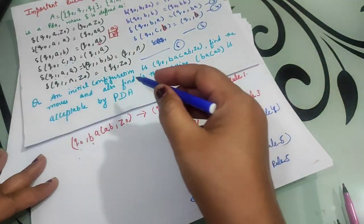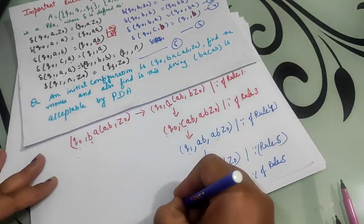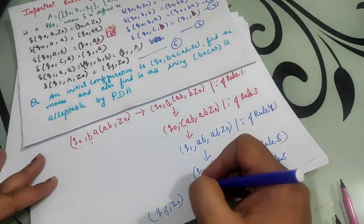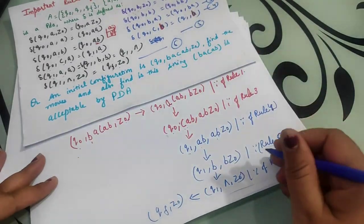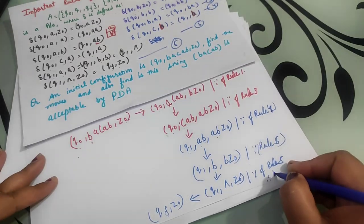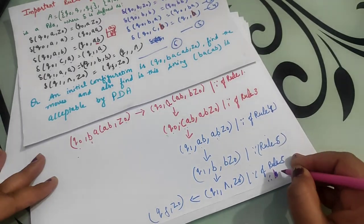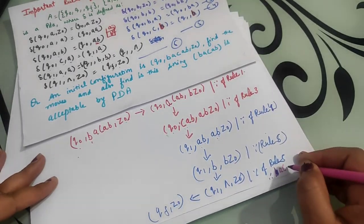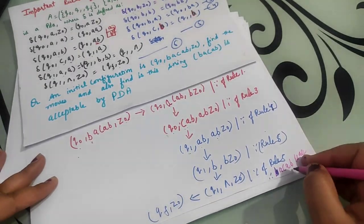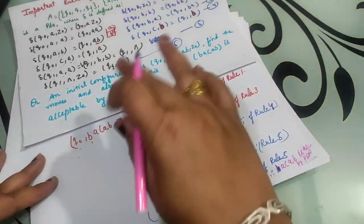Now at q1 state, when null is reached and there is nothing more to push, this means we have reached the final state — qf with z0. Therefore, the string 'b a c a b' is acceptable by this pushdown automata.